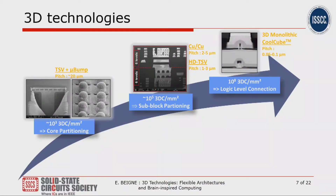Here is a view of the existing 3D technologies available today. The first one on the left is through-silicon via or micro-bump, with a pitch of 20 micrometers. Here we simply stack dies on top of dies, and the idea in terms of flexibility is to have a kind of core partitioning — using different technologies stacked on top of each other to obtain different performances according to circuit requirements. In the middle, the pitch is denser, around one micrometer, which is what we call high-density TSVs or copper-to-copper. Here we can start to think about new architectures with sub-block partitioning at a fine grain, and I'll show how this is efficiently used for imagers.